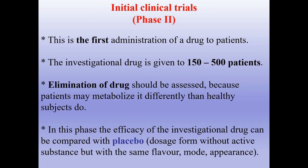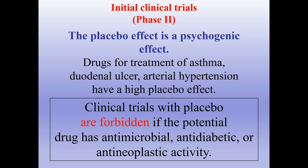Phase two is the first administration of a drug to patients. The investigational drug is given to 150–500 patients. Elimination of the drug should be assessed because patients may metabolize it differently than healthy subjects. In this phase, the efficiency of the investigational drug can be compared with placebo — the dosage form without active substance but with the same flavor, mode, and appearance. The placebo effect is a psychogenic effect. Drugs for treatment of asthma, duodenal ulcer, and arterial hypertension have a high placebo effect. Clinical trials with placebo are forbidden if the potential drug has antimicrobial, antidiabetic, or antineoplastic activity.